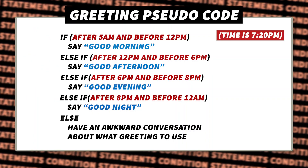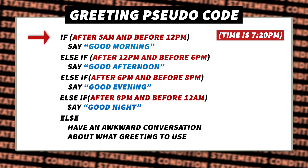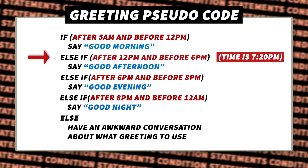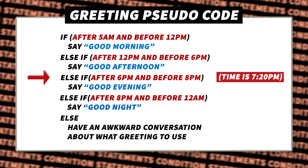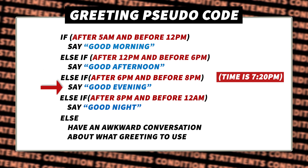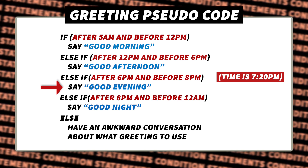Let's explore how our pseudocode works when the time is 7:20pm. The first if statement — after 5am before 12pm — is false. The else-if statement — after 12pm before 6pm — is also false. We go down to the next else-if: after 6pm and before 8pm. 7:20pm fits into this category, making this statement true, so we execute the code and say good evening. Then we skip everything else.